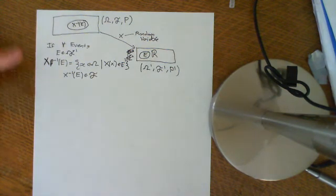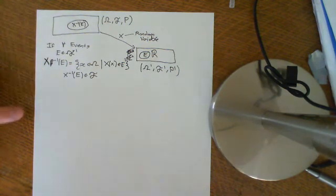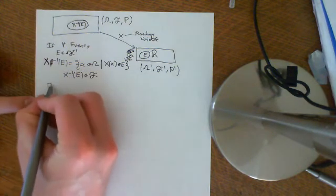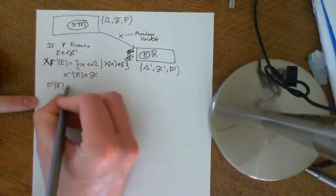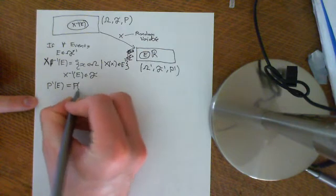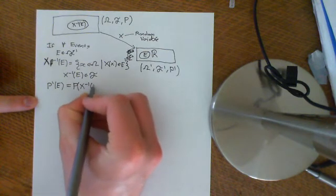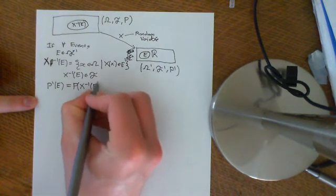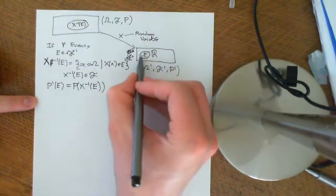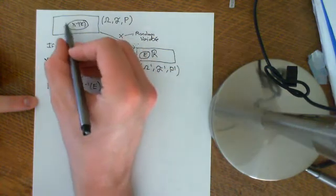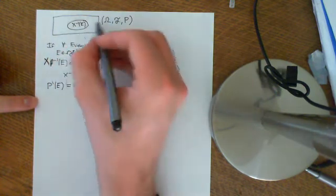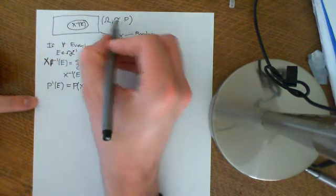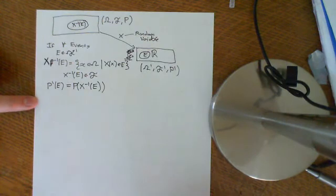The second condition is that if you take P'(E), that should be equal to P(X⁻¹(E)). So the probability of this event in the second space should equal the probability of its inverse image in the first space — they should be the same number.